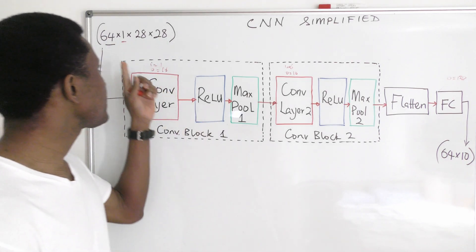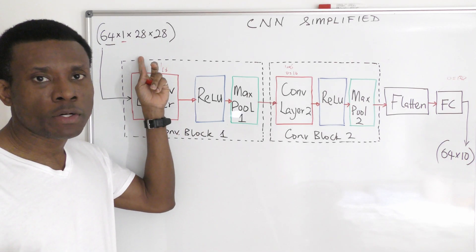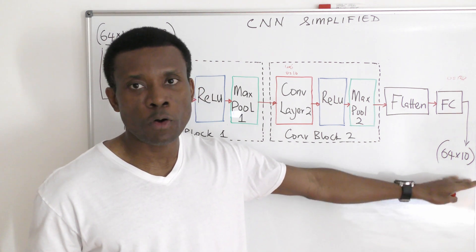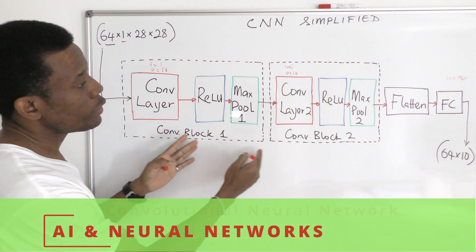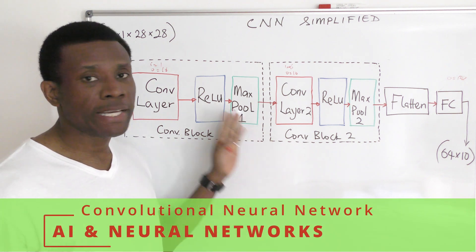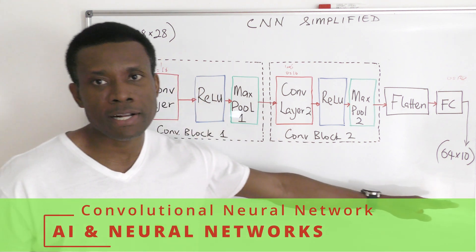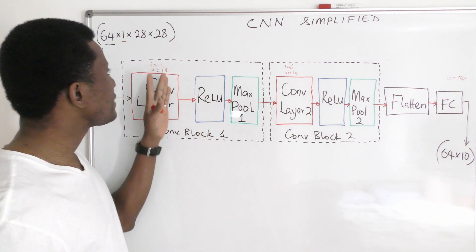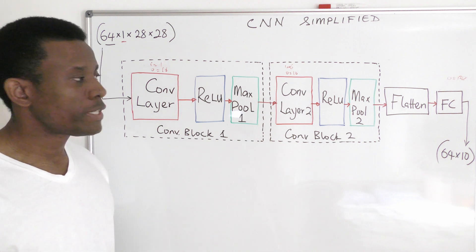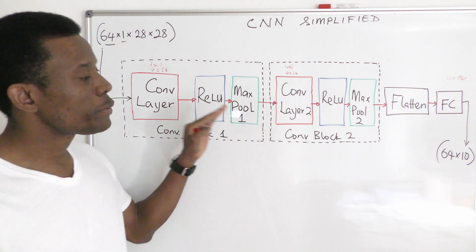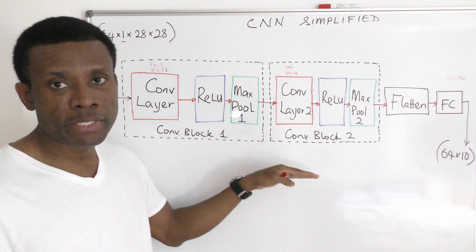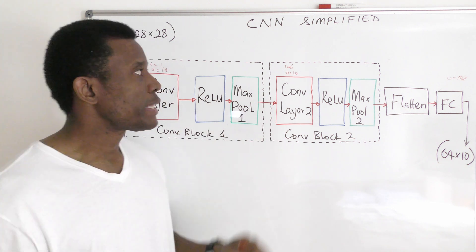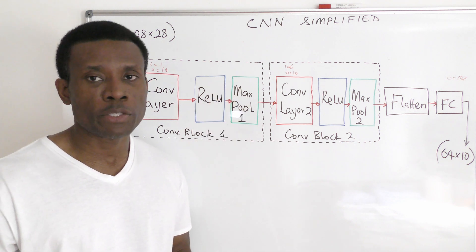How does an input that has a dimension of 64 by 1 by 28 by 28 end up as an output of 64 by 10? How does this component of this convolutional neural network change the dimension of this input to produce this output? And what are the properties of these layers or components that affect the input's dimension? This is what we are going to discuss today, and we are also going to code this network up in PyTorch and visualize it in TensorBoard.